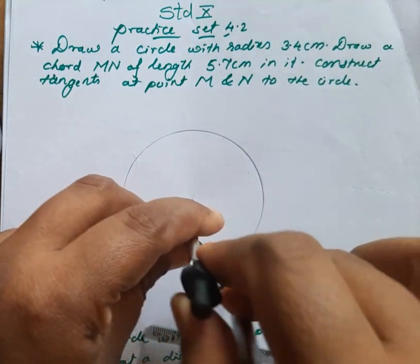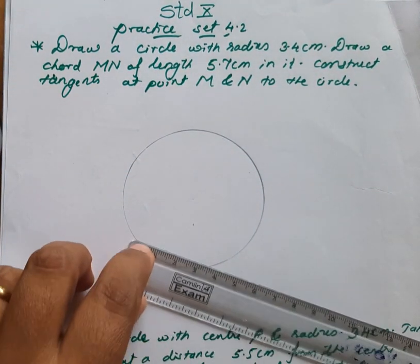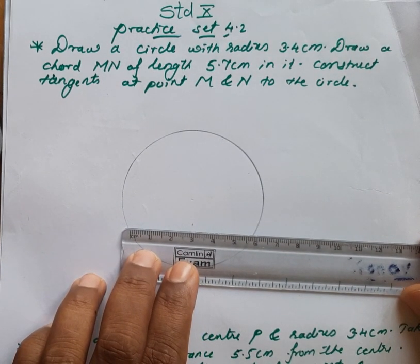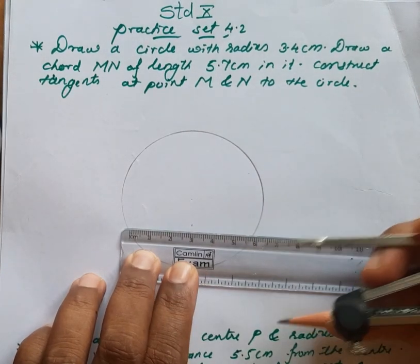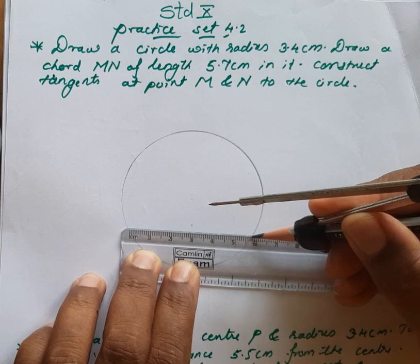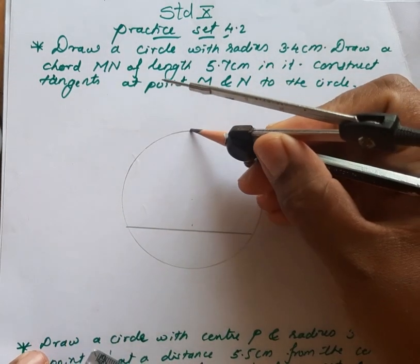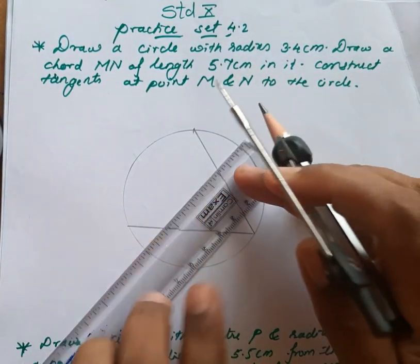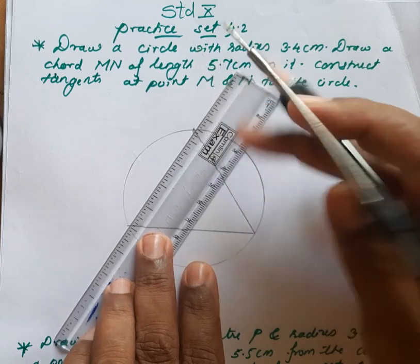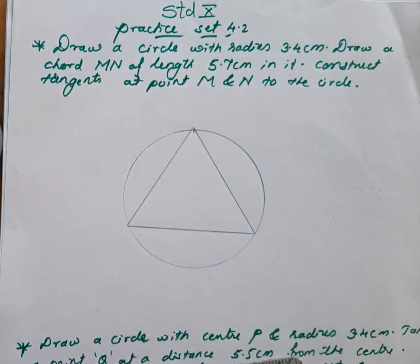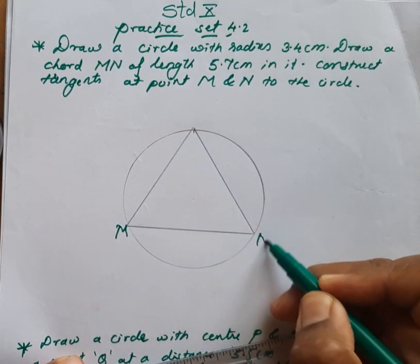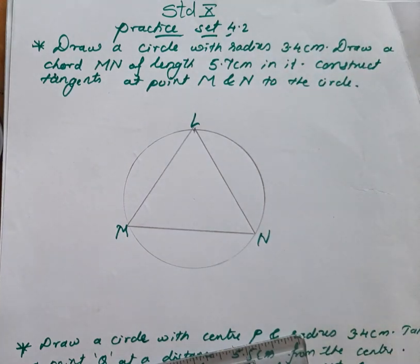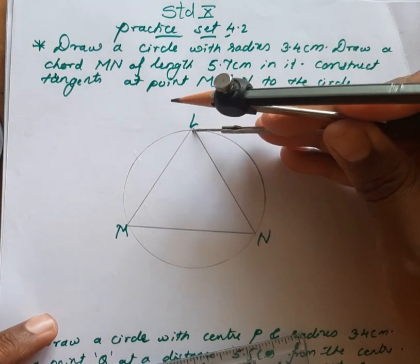Now what we have to do is draw the chord of 5.7 centimeters. See here — 5.7 centimeters. Now we will draw the chord. Take any point here, then we will join these two points to form a triangle. We will name this — in the question there is M and N — so this is M here and this is N.